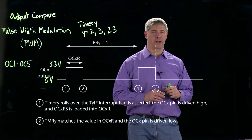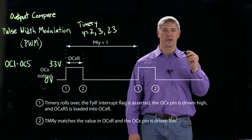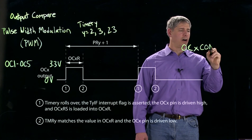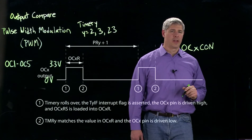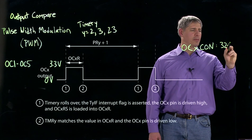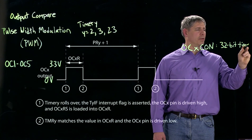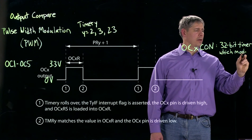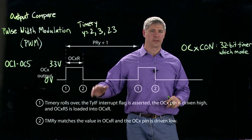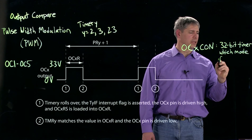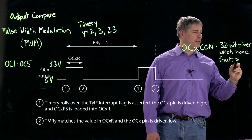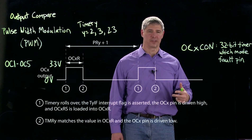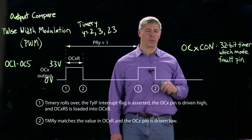There are three basic special function registers used to control OCX — output compare X, where X is 1 to 5. The first is OCxCON, the control register. It determines whether a 32-bit timer or one of the two 16-bit timers (timer 2 or 3) is used, which mode the output compare module operates in (usually PWM), and whether the fault pin is used. The fault pin allows turning off PWM if a fault is detected in the environment; typically we won't use it.